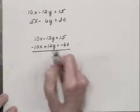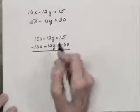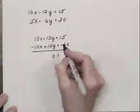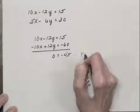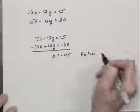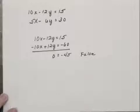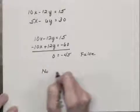I have zero x, and I also have zero y, and that is equal to negative forty-five. Now this is a false statement. And we know when we get a false statement that a system of equations has no solution.